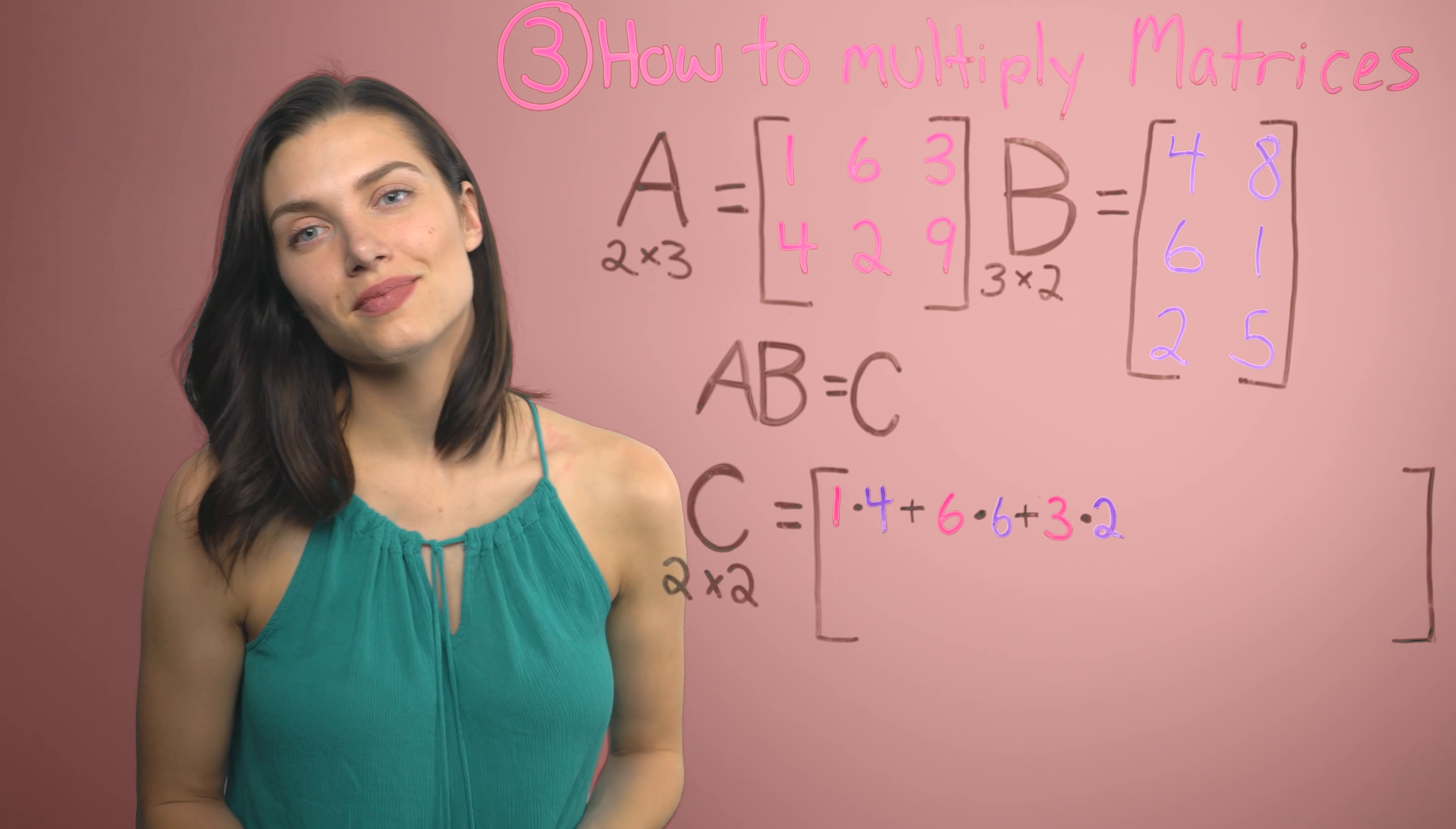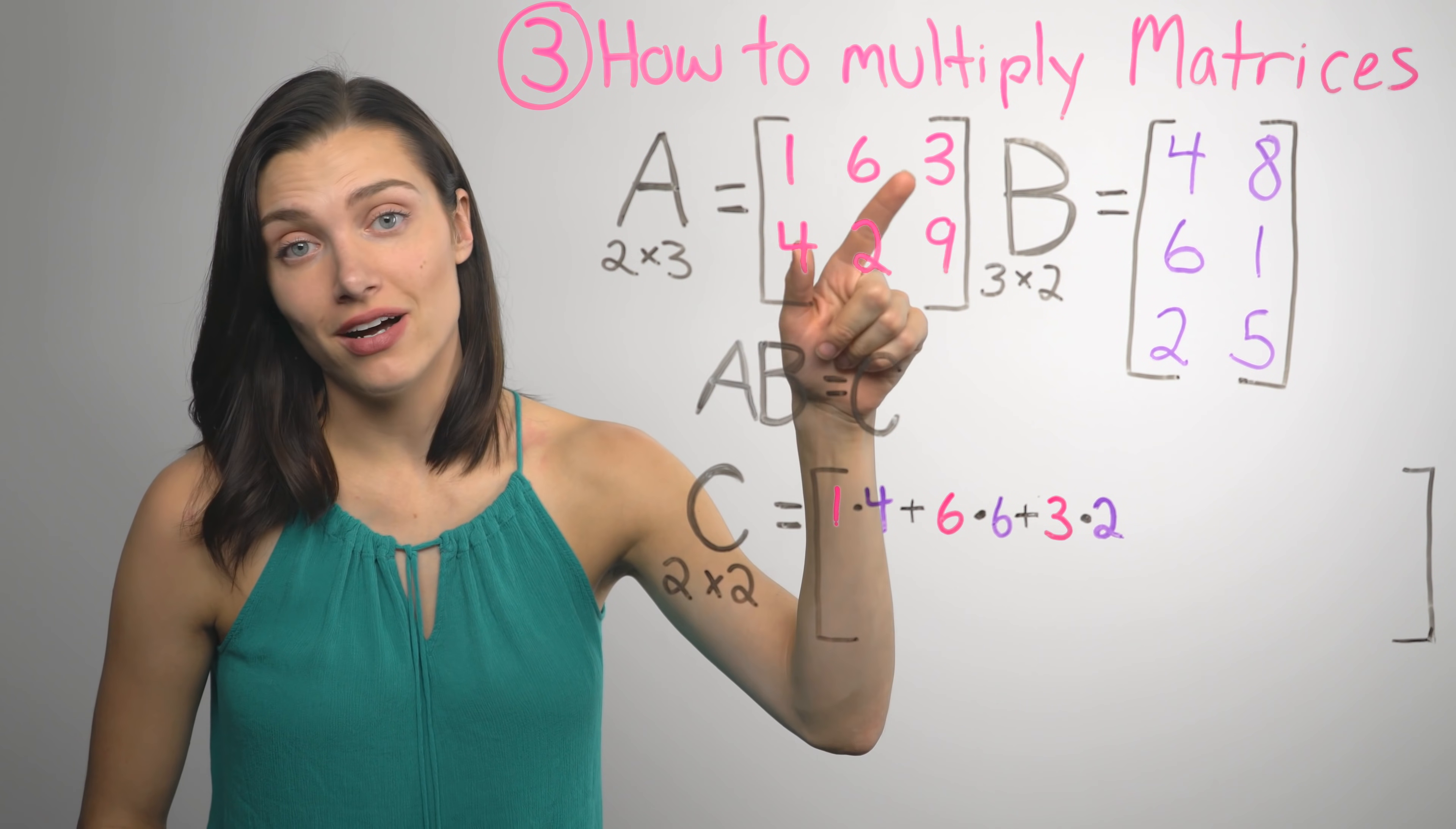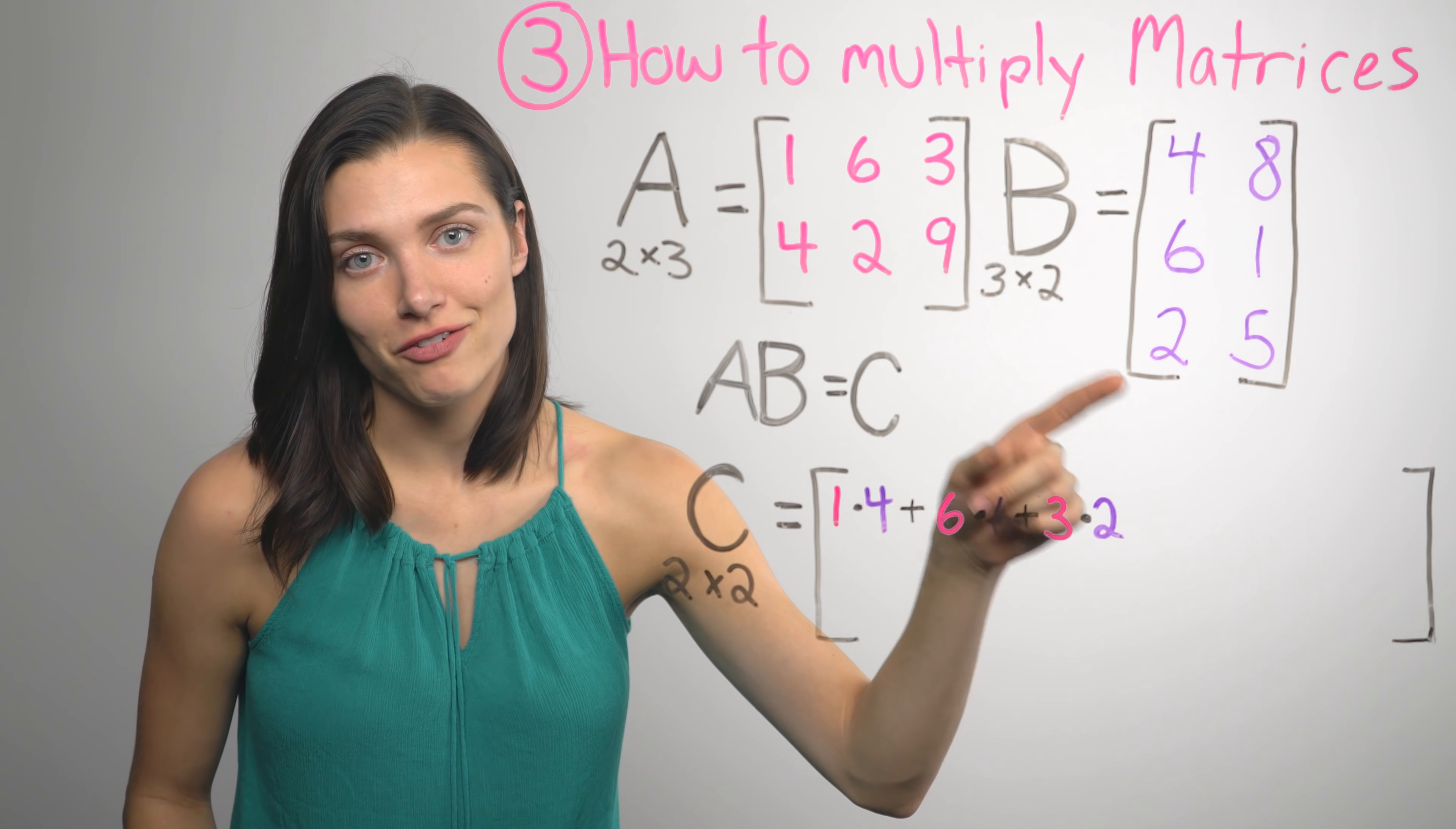So this is it. This is the tricky part you have to remember. So every element in the first row of the answer is going to be made up of all the elements in the first row of A. Just like every element in the first column of the answer is going to be made up of all the elements in the first column of B.